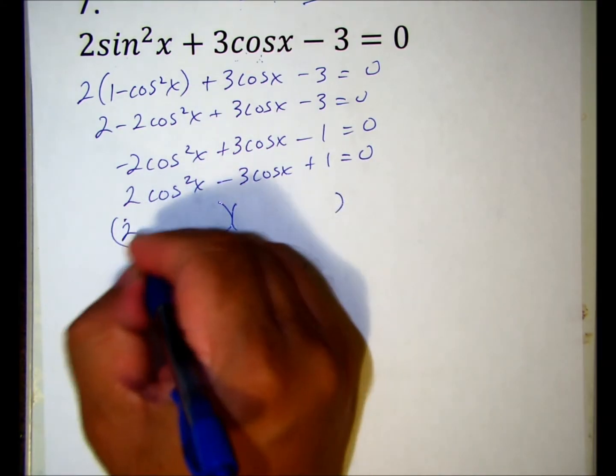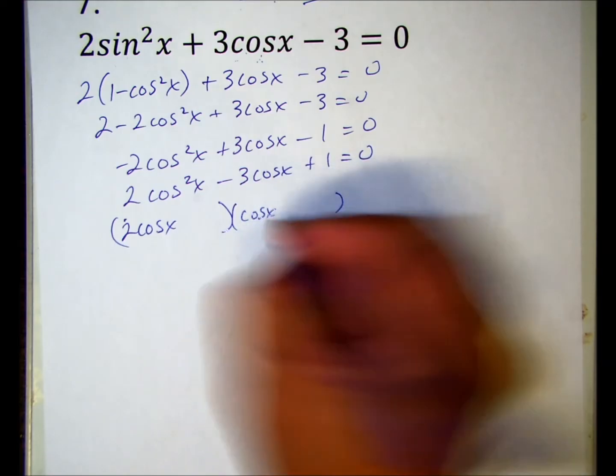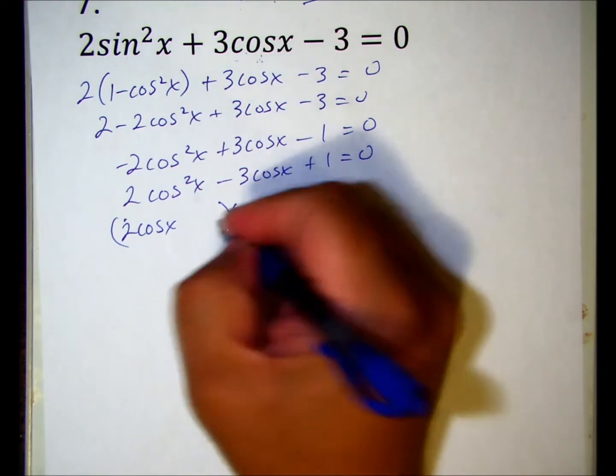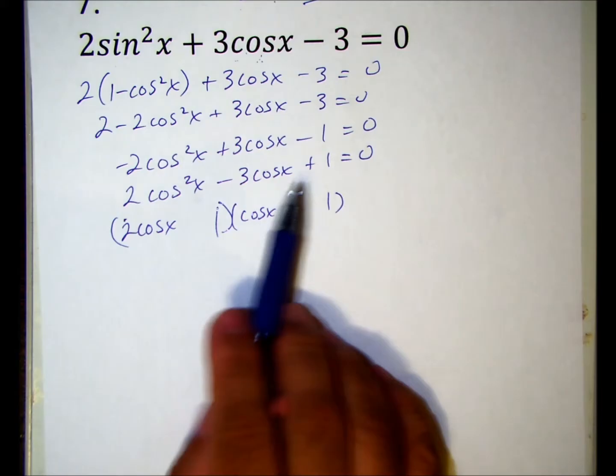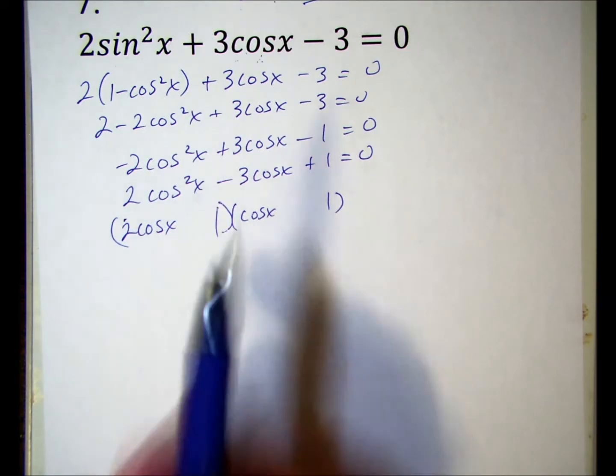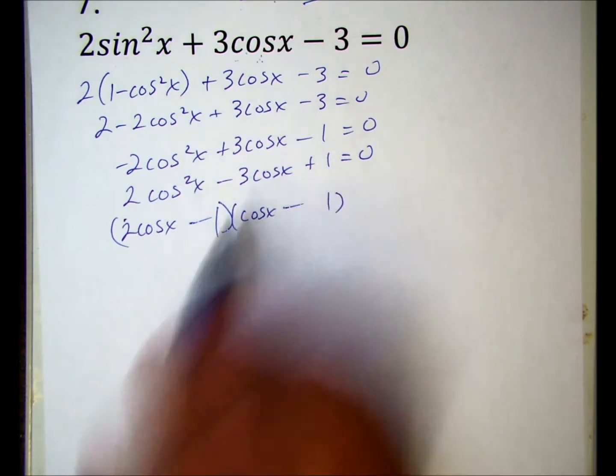This one's pretty easy to factor. There's no choice for two cosine squared x - it's two cosine x times cosine x, and there's no choice for the one. That positive means they have to be the same sign, so it has to be negative because we have a negative term in the middle.